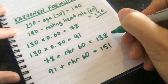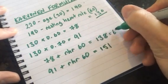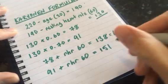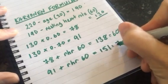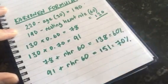So 138 equals 60% of my max. 151 equals 70% of my max.